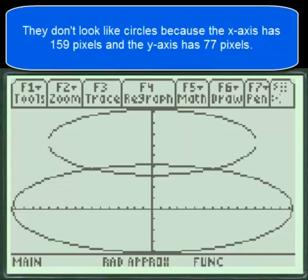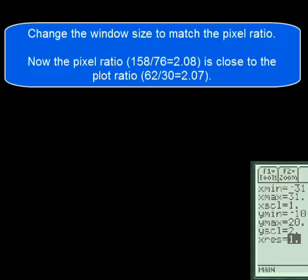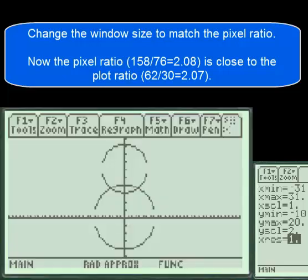They don't look like circles because the x-axis has 159 pixels and the y-axis has 77 pixels. Change the window size to match the pixel ratio. Now the pixel ratio is close to the plot ratio and we see circles.